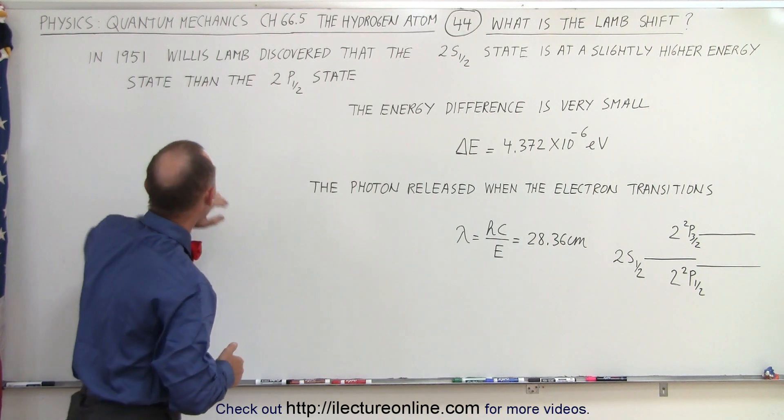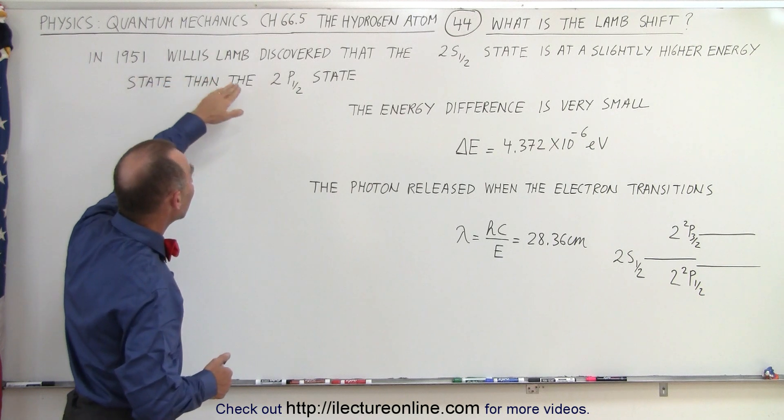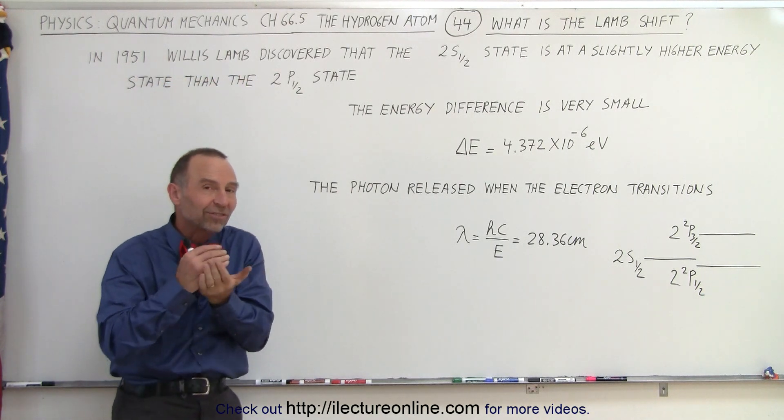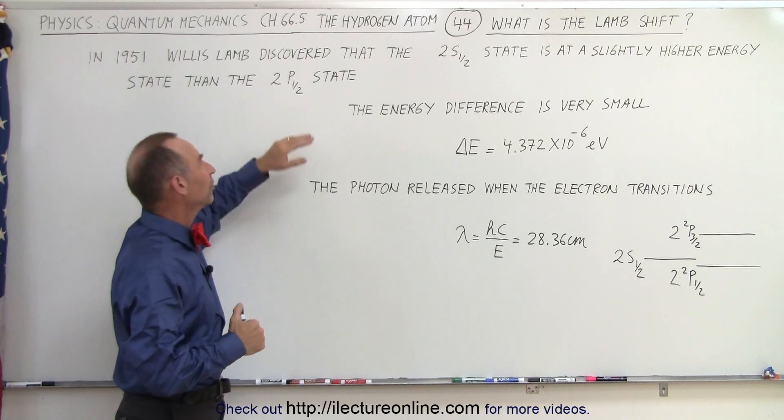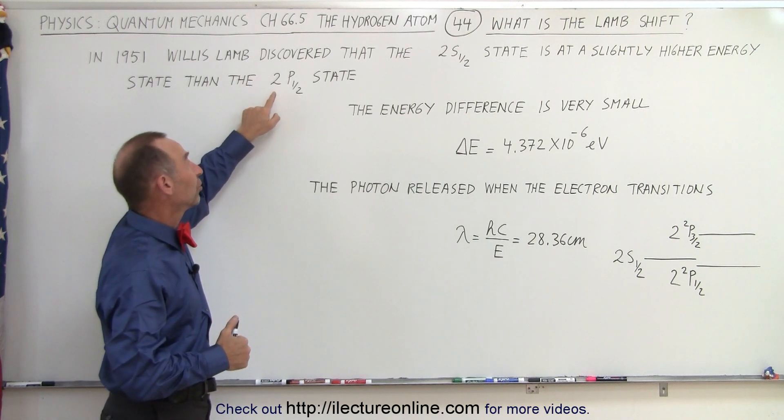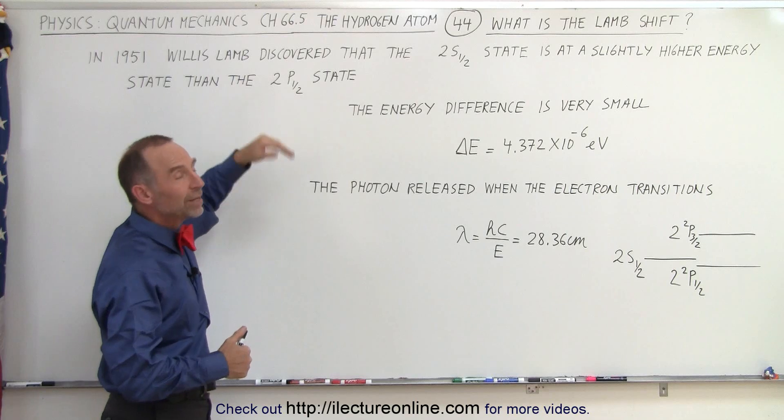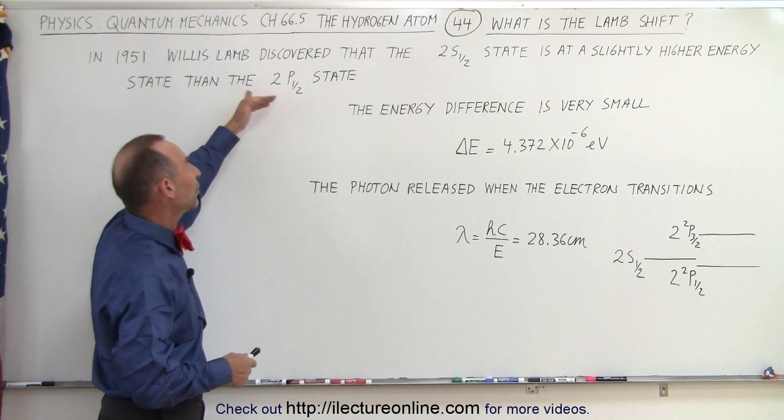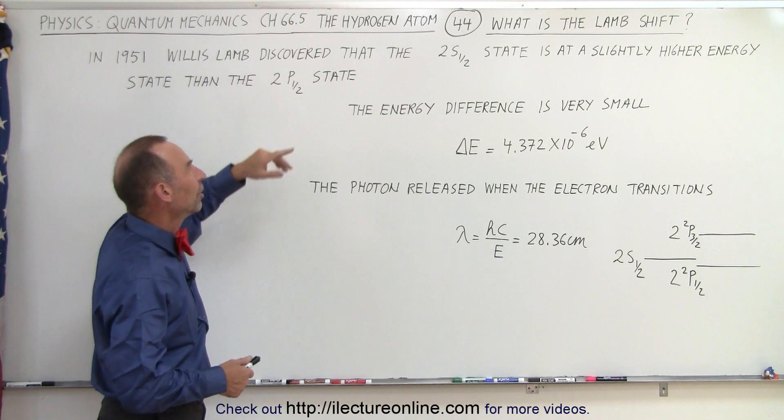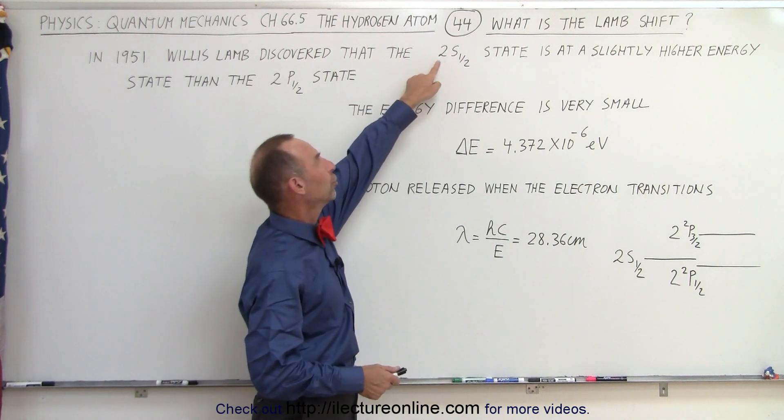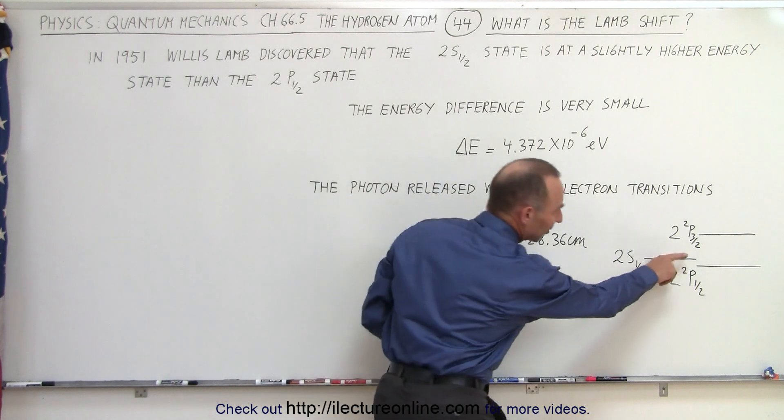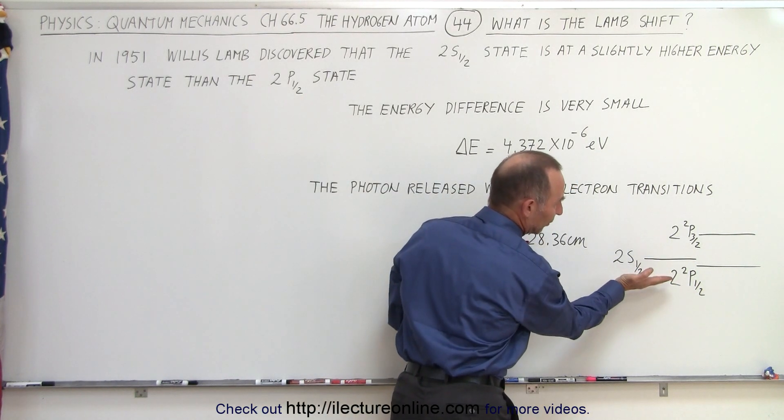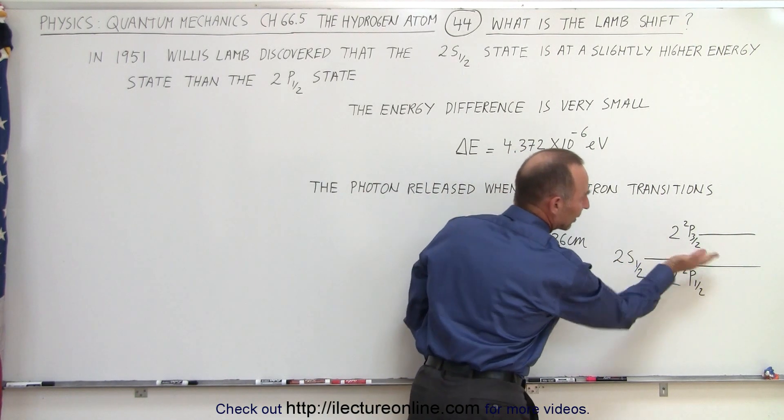In 1951, Willis Lamb discovered that the 2s state was actually at a slightly higher level than the equivalent 2p state. Notice it's the 2s one-half and the 2p one-half. Of course the p state can have a 2p one-half and a p three-halves, but when we look at the 2s one-half and the 2p one-half state, there's a slight difference in the energy level. The 2s state is slightly higher than the 2p state.